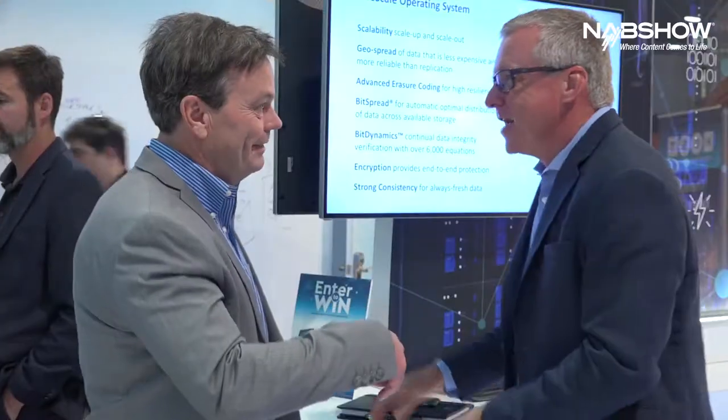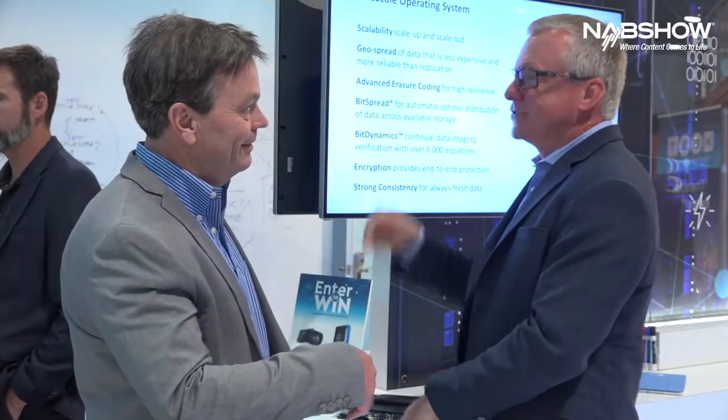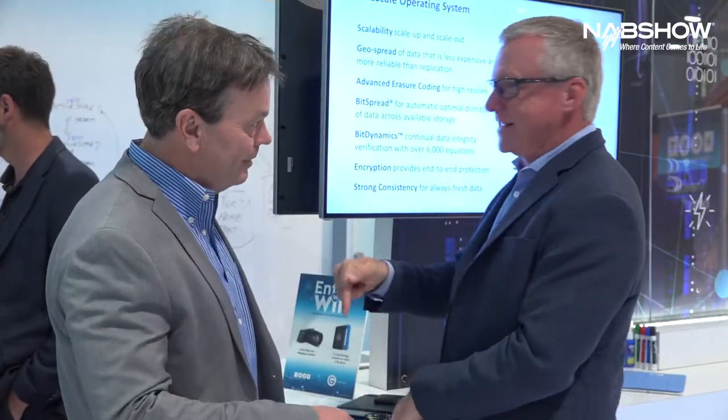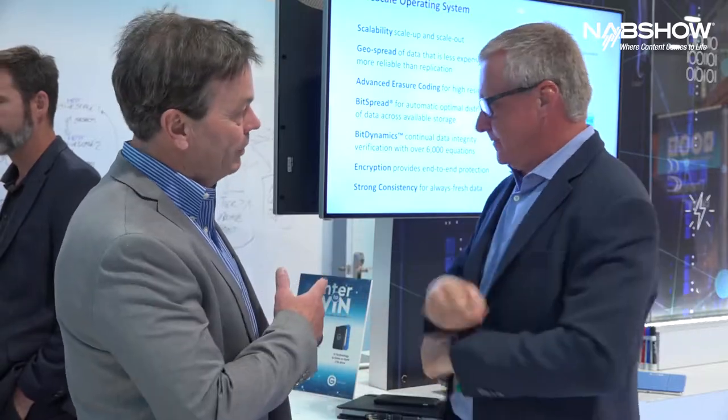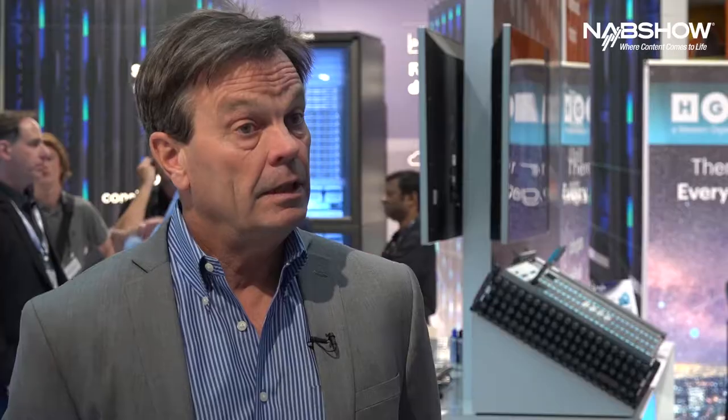The second role that object storage plays is to level out the ebbs and flows — the spikes and valleys of production — by providing a staging area for content that's not actively being manipulated.